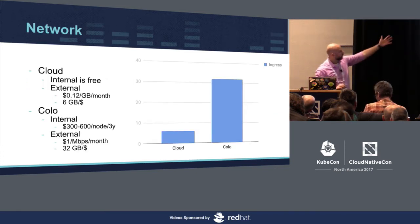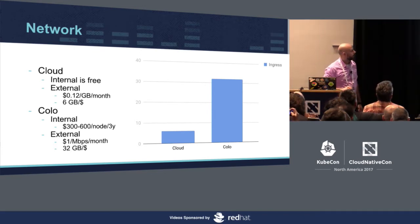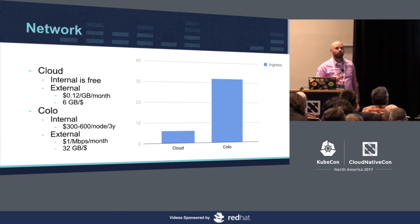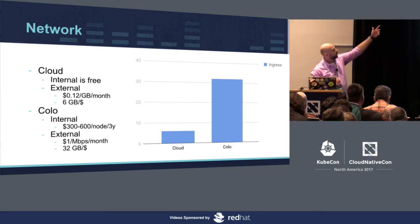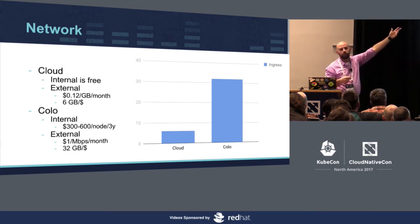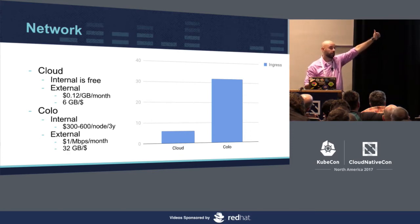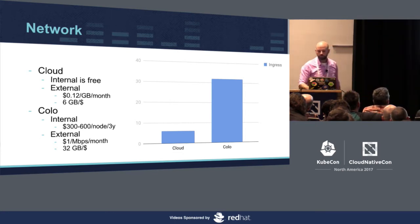For network costs in a colo, a Clos network would come at about $300 to $600 per node over three years. External traffic depends on your ISP, but the general conclusion was about $1 per megabit per month. In the cloud — EC2 — internal traffic within one availability zone is free, which is very nice. However, external traffic is more expensive at about $0.12 per gigabyte. The key difference: in colo you pay for a metered pipe, which can be a lot cheaper.